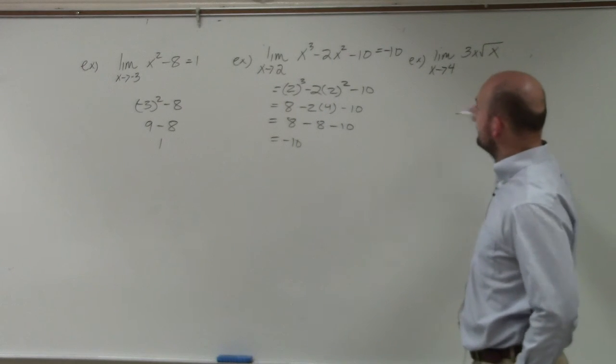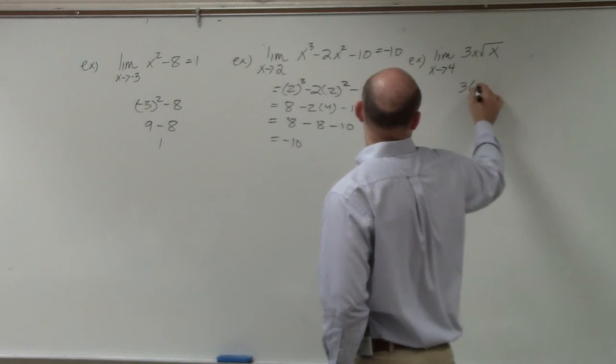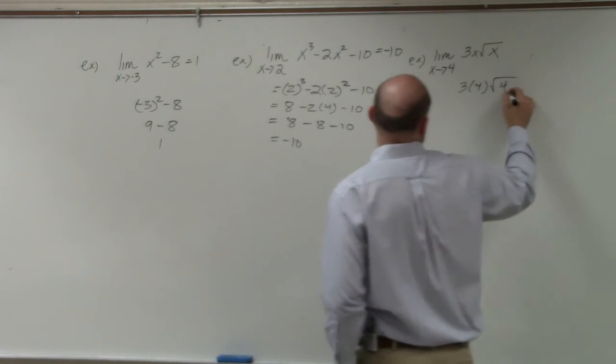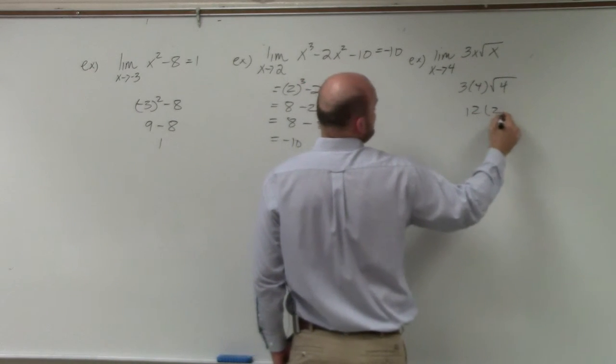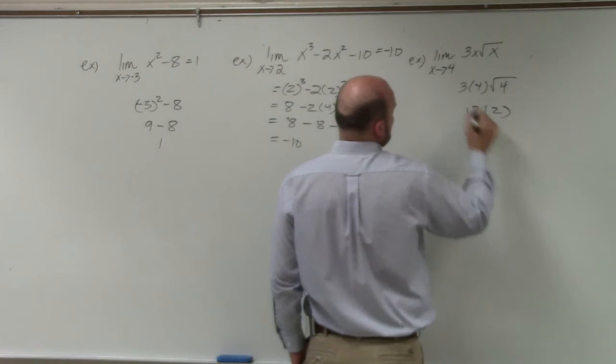And then lastly, we have x as approaches to 4. So we'll just do 3 times 4 times the square root of 4. 12 times 2, 24.